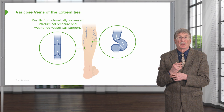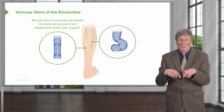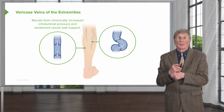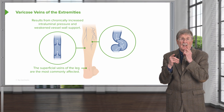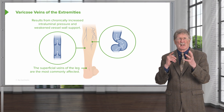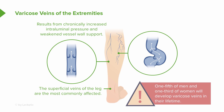So how do we get varicose veins? It's an incredibly common entity, produced by chronically increased intraluminal pressures and weakened vessel wall support. The veins most commonly affected are the superficial ones. Deep veins are not typically affected because they are surrounded by muscle and constantly milked, but peripheral superficial veins don't have much muscle around them and are more prone to develop varicosities. A fifth of men and a third or more of women will develop varicose veins over their lifetime, making this a very common and in some cases very important entity.